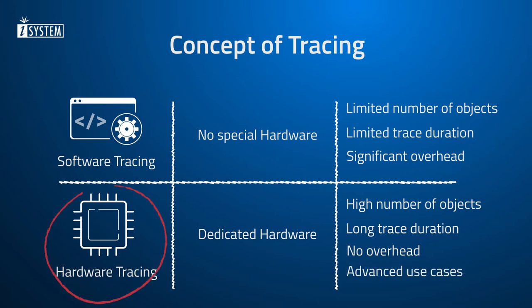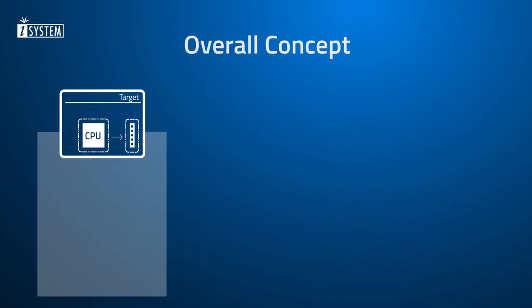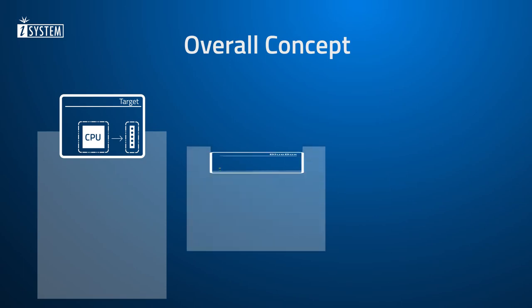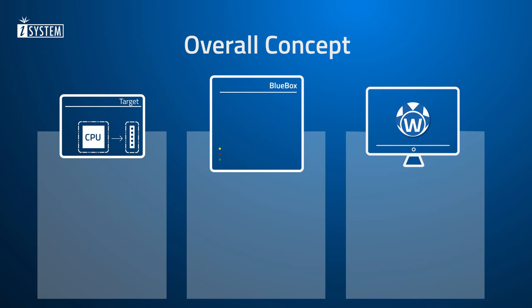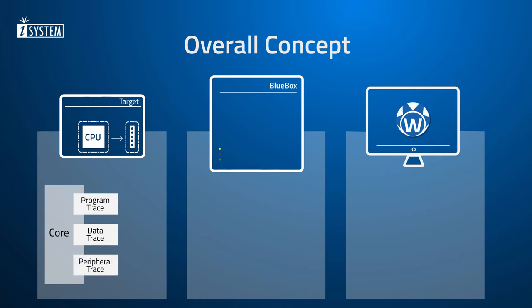For today, let's focus on hardware tracing. To do hardware tracing, we need an embedded target with a microcontroller, an iSystem blue box, and WinIDEA running on a host computer. With hardware trace, you can record all sorts of information generated by the CPU, such as program trace, data trace, and peripheral trace, as mentioned before.